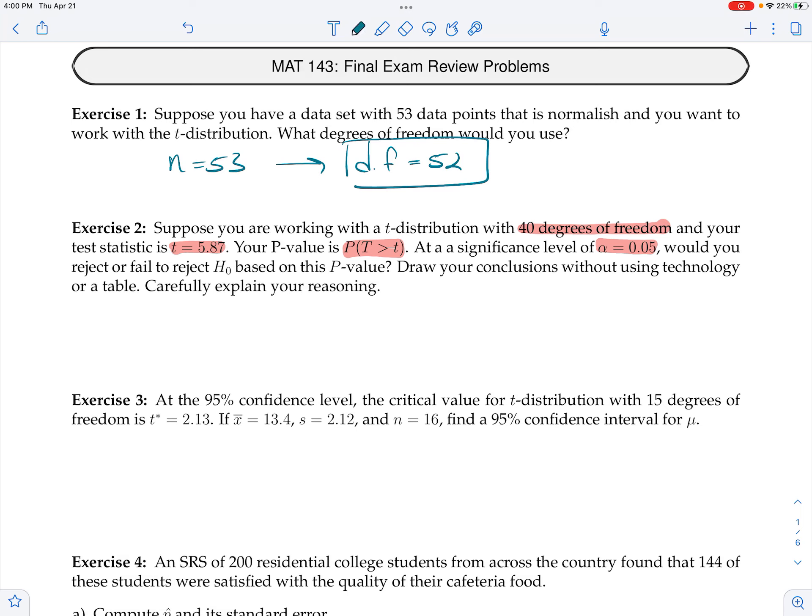So the idea is that with 40 degrees of freedom, the t-distribution becomes approximately like the standard normal distribution. That's the key observation. It's not perfect, but it's close. And so the point is, if you are out 5.87, draw a picture of it if you want. If you're way out here at 5.87, you're going to have a really tiny tail, which is your p-value.